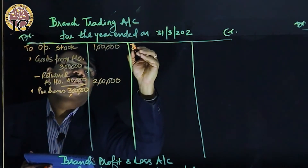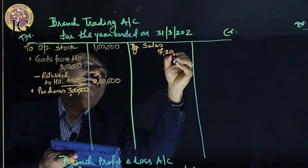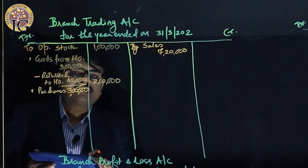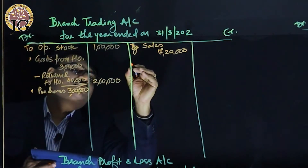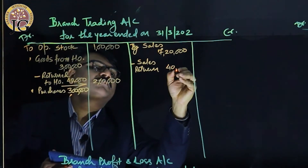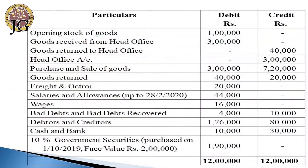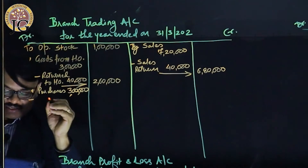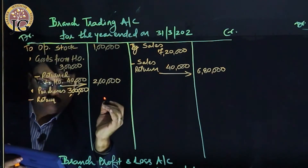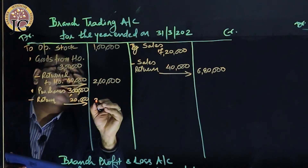Sales of ₹7,20,000 are shown on the credit side of trading account in the inner column. Sales return of ₹40,000 is deducted, giving net sales in the outer column of ₹6,80,000. Similarly, purchase return of ₹20,000 is deducted from purchases, giving net purchases in the outer column of ₹2,80,000.